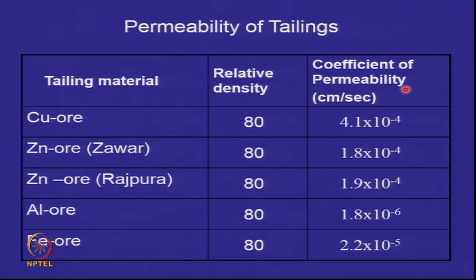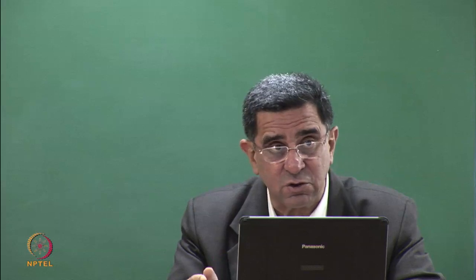Permeability of tailings at 80 percent relative density is in the fine sand size range. Aluminum and iron tailings have greater fines content, so permeability is lower. Essentially these are free-draining materials — predominantly sandy silty sands — not like clay. They will not take months to consolidate. Time for consolidation will be very short, like silty sands.